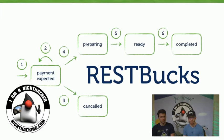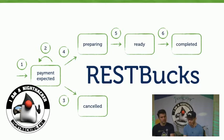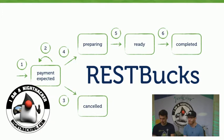REST comes with a lot of constraints — you're limiting yourself to a well-defined set of methods you can use to interact with resources. So the question is: how do you bridge the desire to make business things very explicit and very domain-specific with the fact that you have to constrain yourself to certain architectural means in the REST world? That gap is the interesting bit.